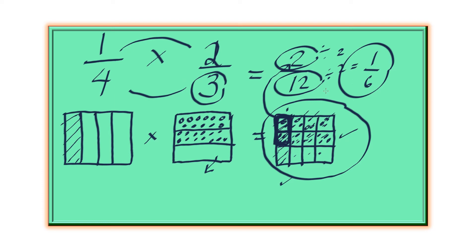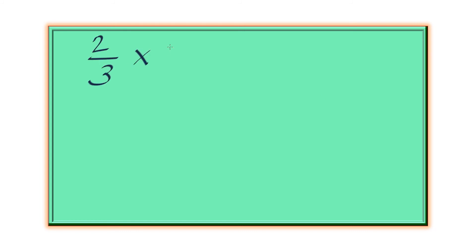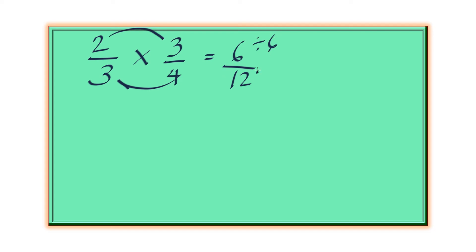The diagram method helps us to visualize what's happening when we multiply these two fractions. Let's take one more example. Let's say 2 thirds times 3 fourths. Again, top to top: 6 over 12, which reduces to 1 over 2, one half.